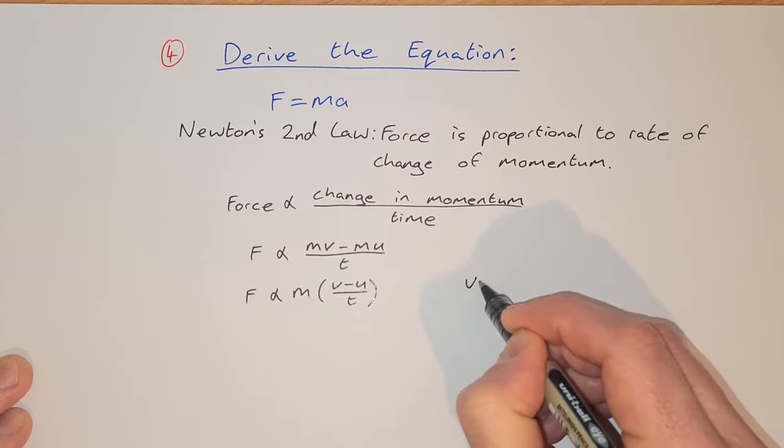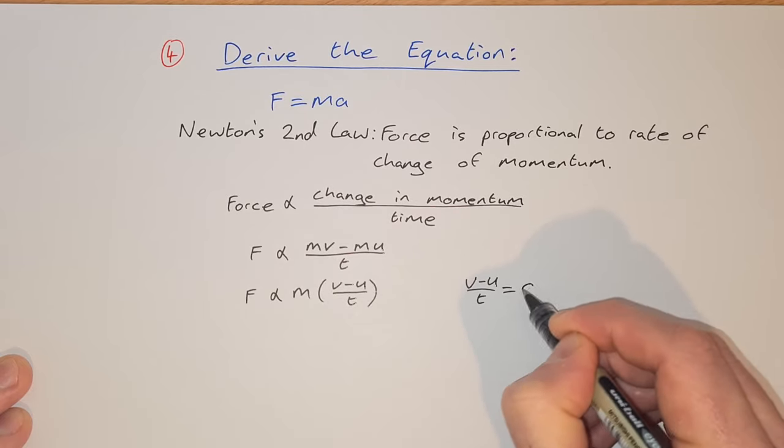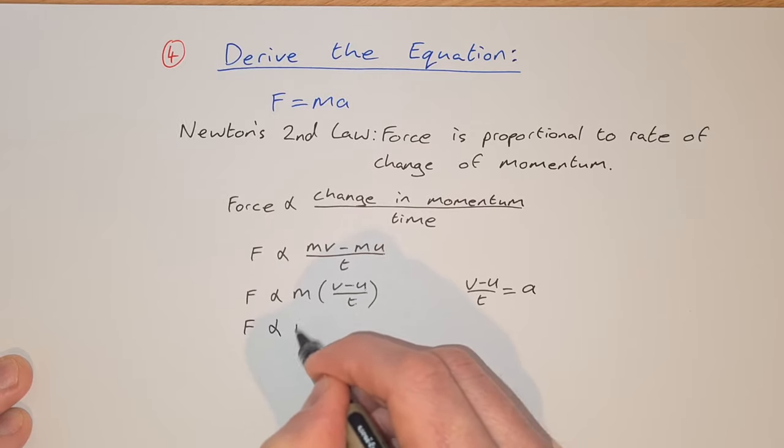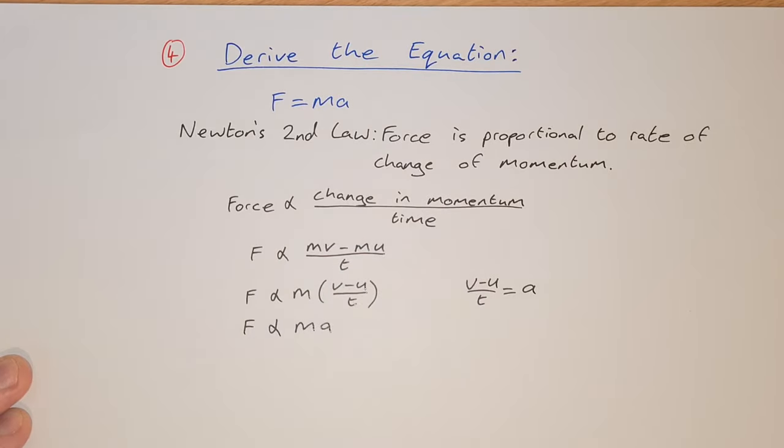Now v minus u over t, well that's just acceleration. So we have f is proportional to m times a, mass times acceleration.